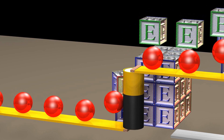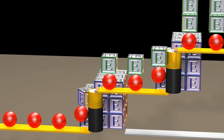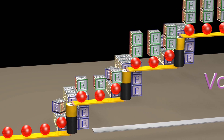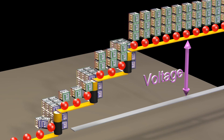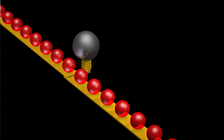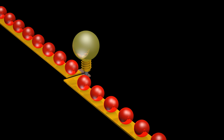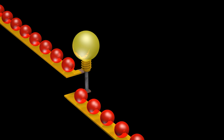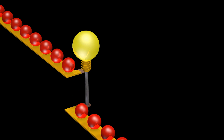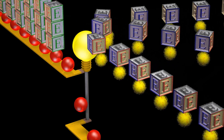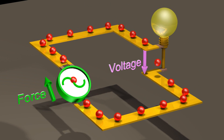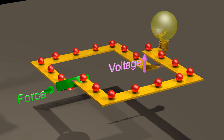Higher elevations represent higher voltages. Higher voltages mean more energy per charged particle. Therefore, the charged particles are shown gaining energy boxes as they rise in elevation. The greater the voltage drop across a light bulb, the greater the current flowing through it. The charged particles lose energy boxes as they fall in elevation, and this energy is now associated with the light and heat coming from the bulb. If we apply an AC voltage across the light bulb, it will behave as shown.